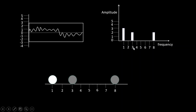At a frequency of 3 cycles per second with an amplitude of 2 units, I have a slightly grey-shaded pixel. There is another pixel at a frequency of 8 cycles per second with the same amplitude of 2 units, so it has the same intensity as the previous pixel. This is how pixel values are represented when converting images from the spatial domain to the frequency domain.